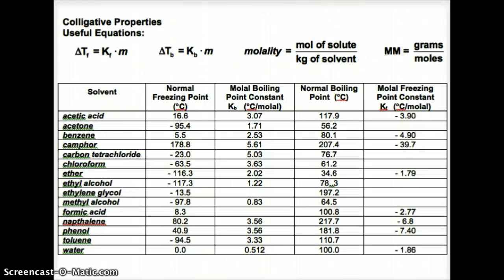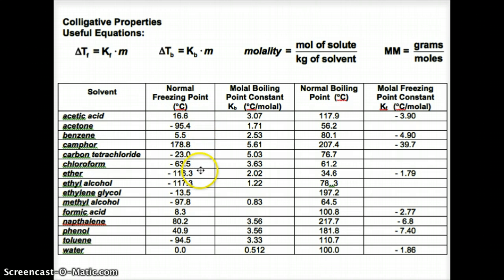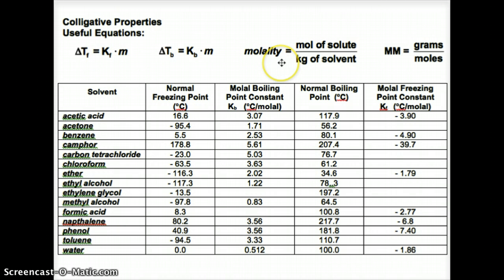Here we have a data table to help find that information. Based on what our solvent is, there is a column of different solvents, with their normal freezing point values, normal boiling point values, and the K values for each solvent. The basic formulas are shown across the top, including the formula for molality — moles of solute over kilograms of solvent. And to find the molar mass, we take grams divided by moles.